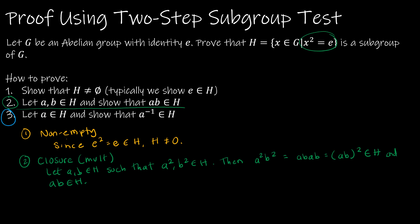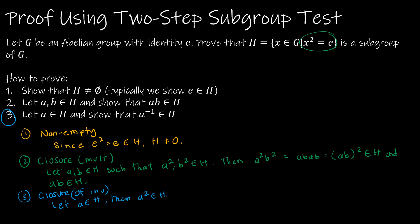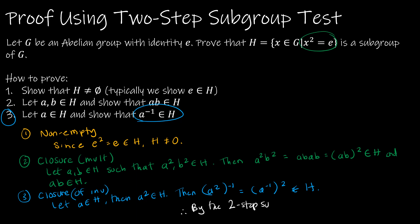Step three is closure under inverses. Let a be an element of H, so a² = e. Then (a²)⁻¹ = e⁻¹ = e, and (a²)⁻¹ = (a⁻¹)², so (a⁻¹)² = e, which means a⁻¹ is an element of H. Therefore, by the two-step subgroup test, H is a subgroup of G.